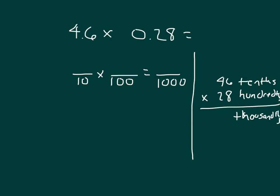We could work that out. 8 times 6 is 48, regroup the 4. 8 times 4 is 32, plus 4 is 36. Place a 0, because I am working with that 2, which is worth 20. 2 times 6 is 12, regroup the 1. 2 times 4 is 8, plus 1 is 9. I carefully add those together. That's 1,288 thousandths.